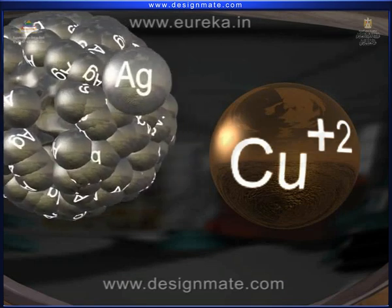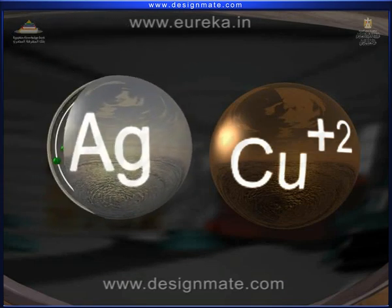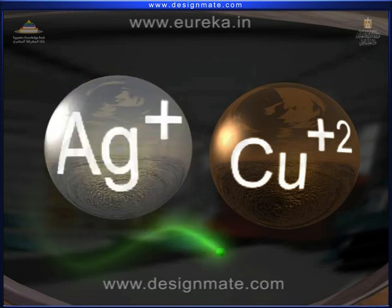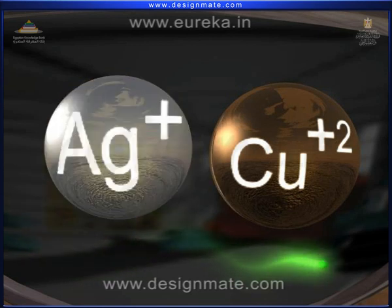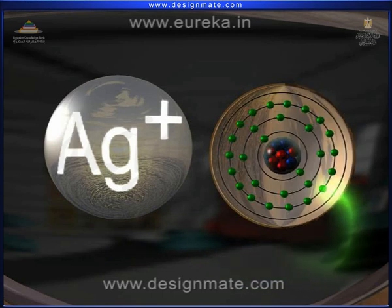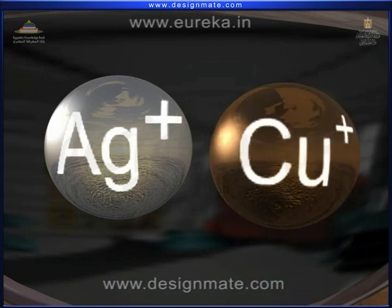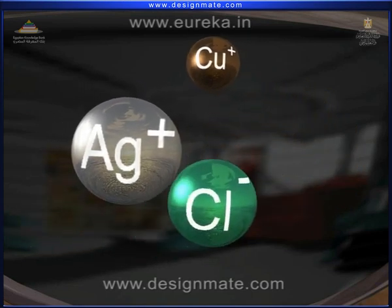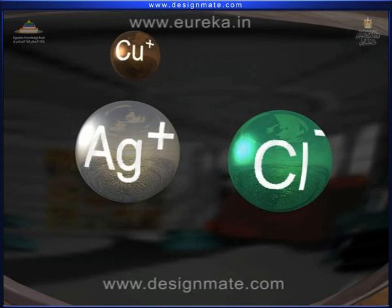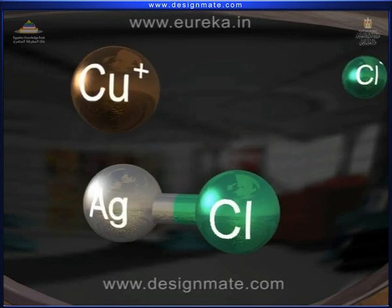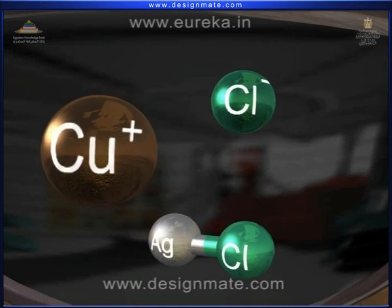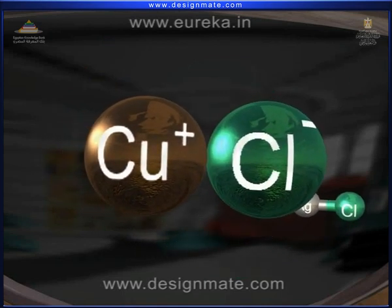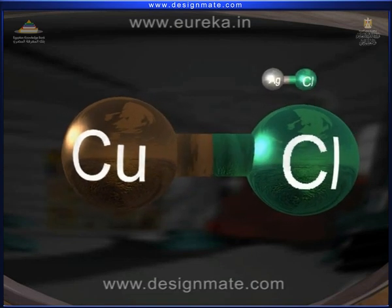The Cu+ ion then combines with the Ag atom, where the Ag atom loses an electron to form Ag+ ion, and this released electron is picked up by Cu+ ion to form Cu+ ion. The Ag+ and Cl- ions rejoin once again to form silver chloride, while Cu+ ions combine with untreated Cl- ions in the glass to form copper monochloride once again.